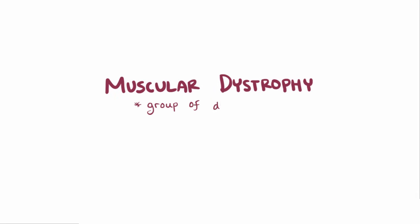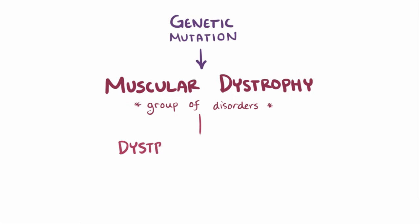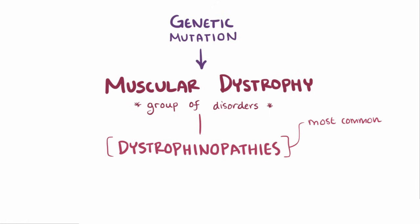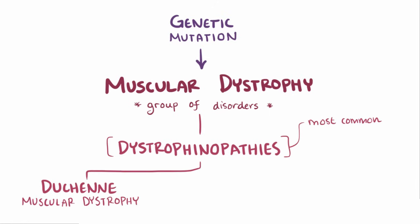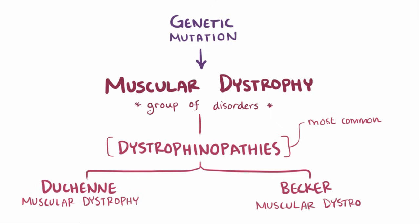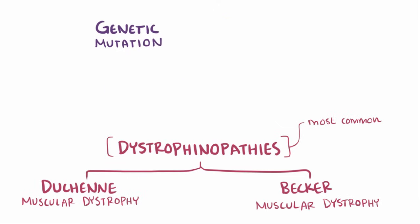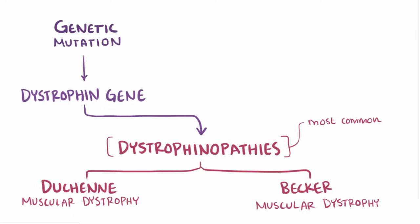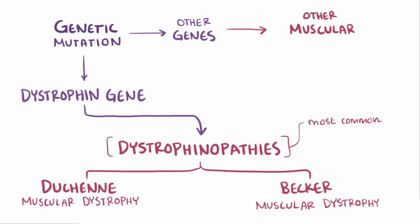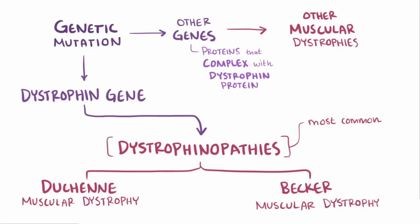Muscular dystrophy is actually a group of disorders, all of which are caused by genetic mutations. Within that group, dystrophinopathies are the most common, which includes Duchenne muscular dystrophy and Becker muscular dystrophy, both of which result from mutations in the dystrophin gene. Genetic mutations in other genes are responsible for several dozen other muscular dystrophies, some of which code for proteins that form a protein complex with dystrophin protein, causing many of the same symptoms.